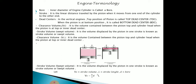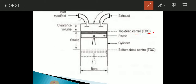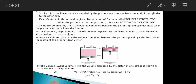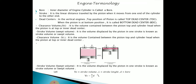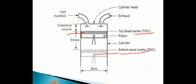Stroke is the distance traveled by the piston when it moves from TDC to BDC or BDC to TDC — in short, when the piston travels from one end to the other. There are two dead centers in an IC engine: top dead center (TDC) and bottom dead center (BDC). When the piston is at the extreme position at the top, it is called the top dead center; when the piston is at the extreme position at the bottom, it is called the bottom dead center.